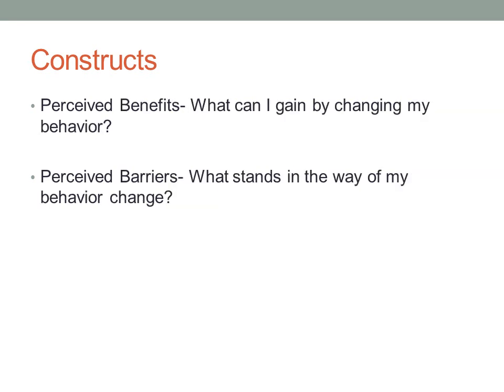The second set of constructs involves the perception of whether the benefits of the health behavior outweigh the costs and barriers. We have perceived benefits — what can I gain by changing my behavior? — and perceived barriers — what stands in the way of my behavior change? Basically, this is weighing your pros and cons, which everyone does when trying to make a decision, including health decisions.